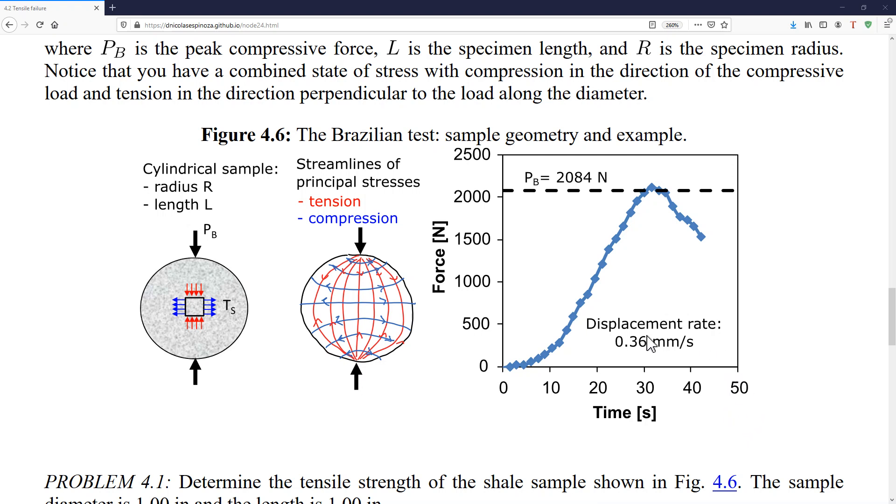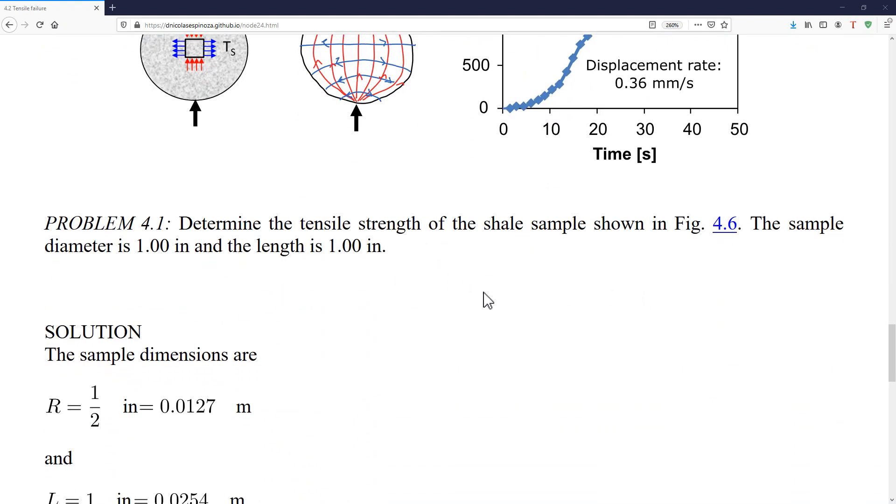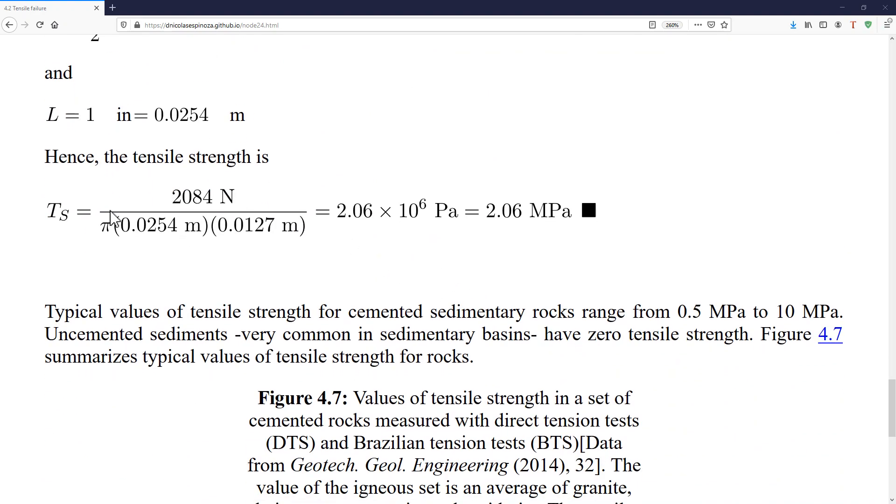Depending on your application, you could also change this displacement rate. One more thing to mention about the tensile strength test is that we could also plot this force or stress as a function of time or of displacement. You may be tempted to calculate a stiffness parameter from here, but usually that's not a good idea. So, the only thing that we're going to get from the tensile strength test is just the maximum value, which is going to give us the tensile strength. All right, so here you have one example about this tensile strength test and how to calculate this tensile strength.